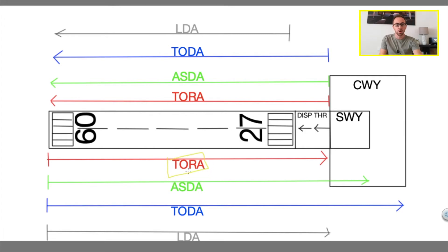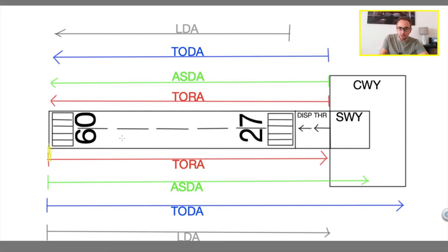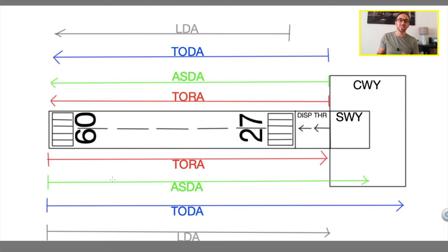TORA — as you can see here, I've got TORA for runway 09 and TORA for runway 27. TORA is the Takeoff Run Available. For runway 09, it is the distance from the threshold all the way down to the other end of the runway, or to the end of the displaced threshold if that's the case. For runway 27, the TORA will be from the displaced threshold all the way down to the end of the runway. The takeoff run available is the distance the airplane has available for the takeoff run — the distance on the ground to reach the unstick speed.